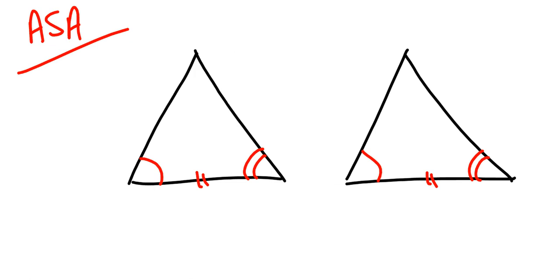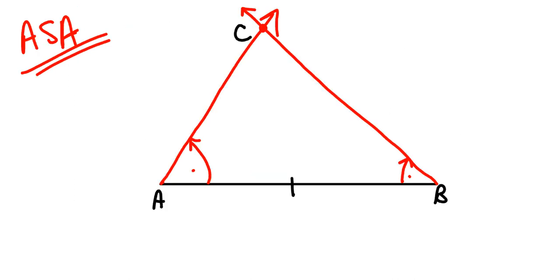Which means that if you ever have a scenario where angle, angle, and the side between them is congruent to angle, angle, and the side between them, then angle-side-angle is a legitimate way to prove that two triangles are congruent. It's because of this picture.